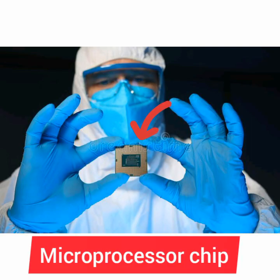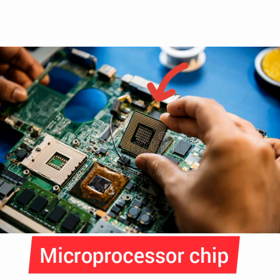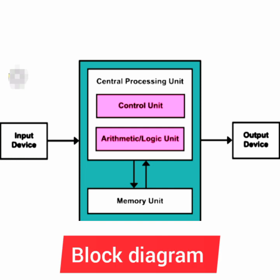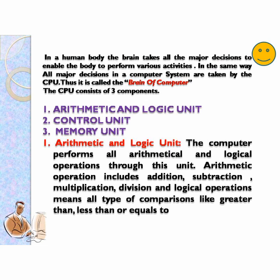You can see a microprocessor chip which is a hardware, and it can be fixed inside the CPU. This is also a microprocessor chip. This is the figure of a CPU — it takes inputs from an input device, then it comes to the CPU, which has three parts: ALU, CU and MU. After that it gives the results or processed data to the output device. In a human body, the brain takes all major decisions to enable the body to perform various activities.